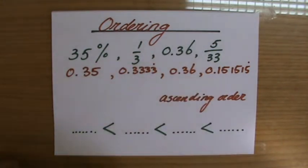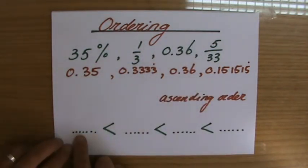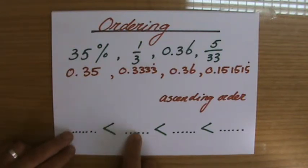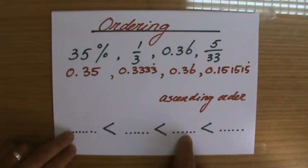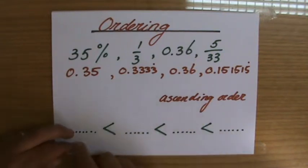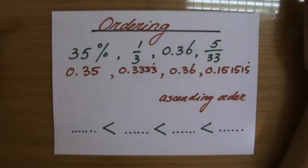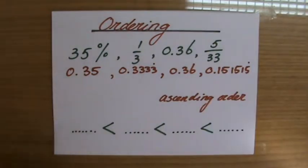Now I've written down all the decimals and I can compare them. I have to start with the smallest. Let me check — is it in ascending order? Yes, because the crocodile will eat the larger number. So the smallest number: let's look at the place values — that's how you compare.